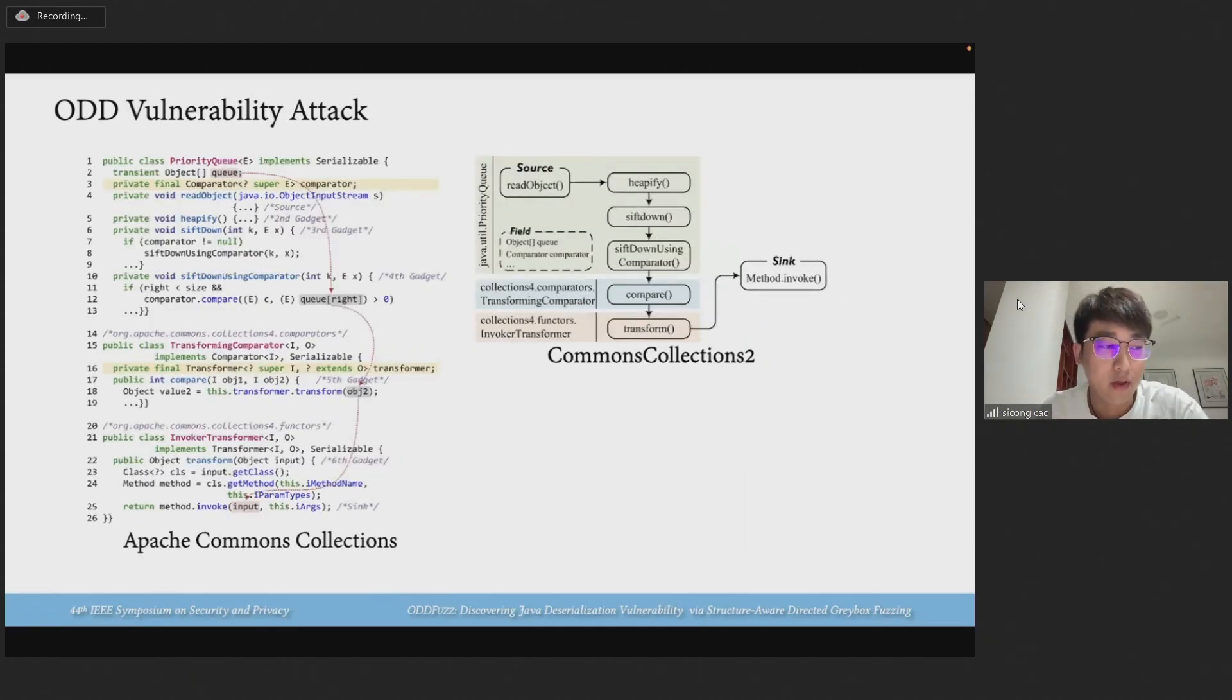Let's look at a simplified example named Commons Collections 2 in an ACC library. An attacker can initiate an injection object PriorityQueue in the first line, which contains a malicious payload within its field queue for exploitation. To enable the injection object to follow the execution flow that the gadget chain specifies and finally trigger the security-sensitive sync method invoked at line 25, the attacker should dynamically set the property comparator to an instance to facilitate the payload object reaching the sink.